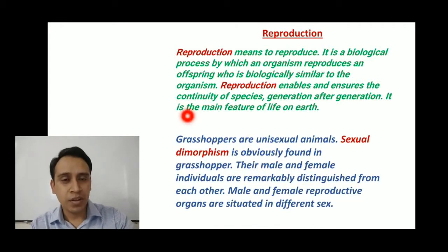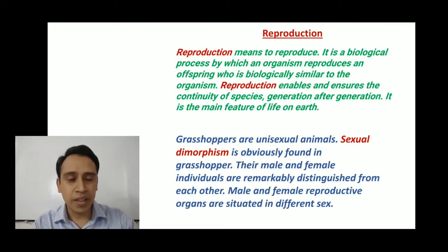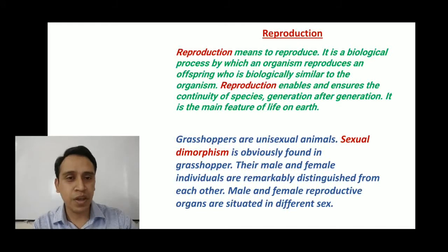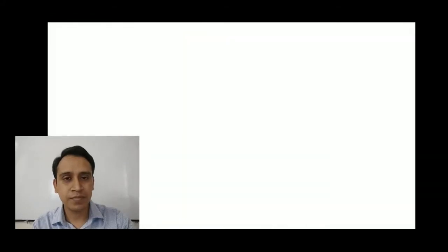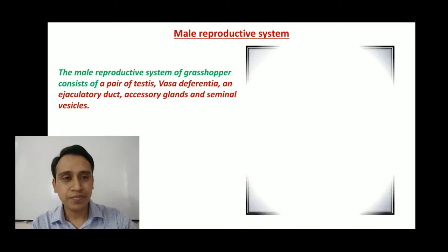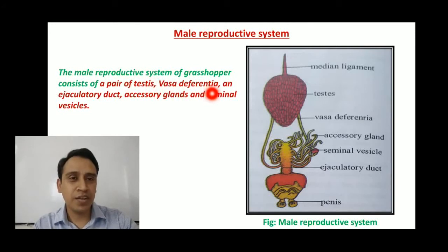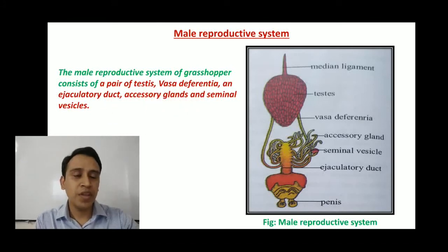Grasshopper is a unisexual animal, so sexual dimorphism is obviously found in Grasshopper and the male and female animals are distinguished with their different characteristics. The male and female reproductive systems are basically situated in different sexes. We are going to talk about the male reproductive system. You can see the male reproductive system of Grasshopper consists of a pair of testes, vasa deferentia, and ejaculatory duct, accessory glands, and seminal vesicles. Here you can see the diagram of the male reproductive system.